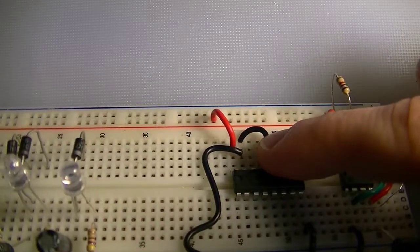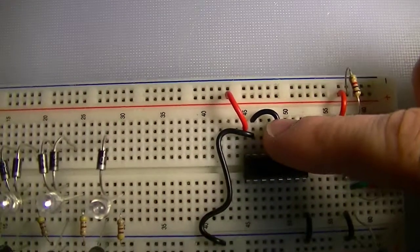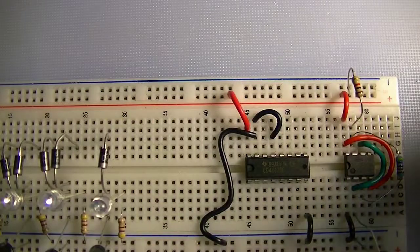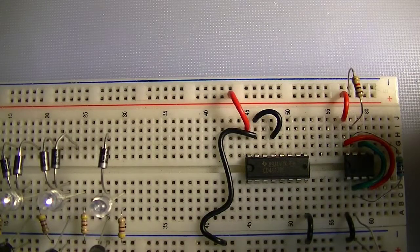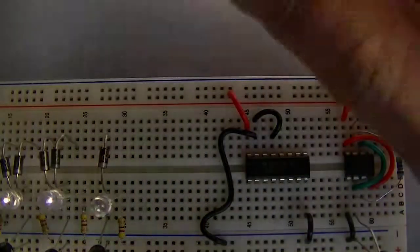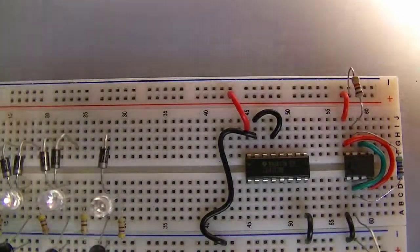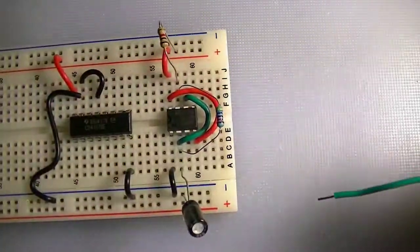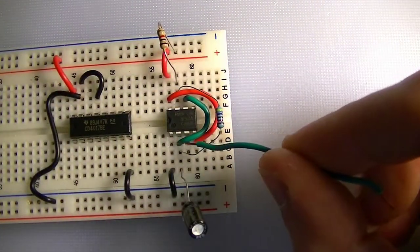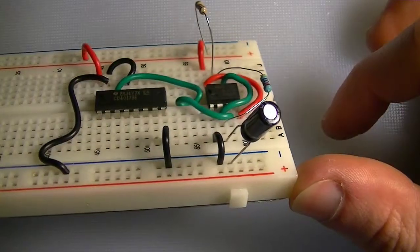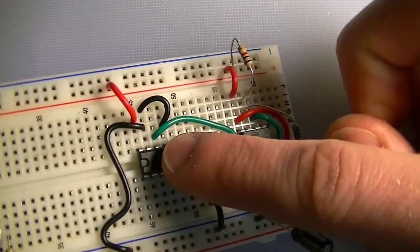There's one pin in the middle not connected to anything yet. Actually we can connect that up to our 555 timer because that's pin 14. So the output of our 555 timer is pin 3. So if we go over to our timer, 1, 2, 3 goes to pin 3 and goes to pin 14.